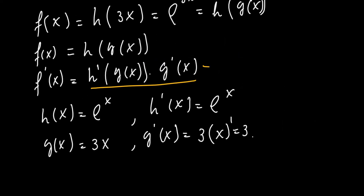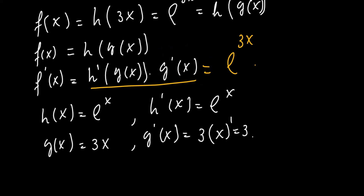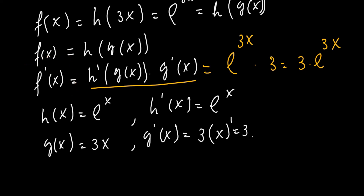Now applying the formula: f'(x) equals h'(g(x)) times g'(x). h'(x) is e^x, evaluated at g(x) = 3x, giving e^(3x), times g'(x) which is 3. So the first derivative is 3 times e^(3x).